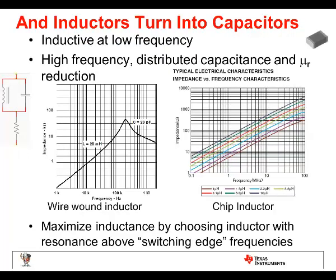Inductors can also be capacitive, because the winding around the magnetic core has capacitance between windings in parallel with the inductance, plus series resistance. On the frequency chart, sweeping from 1 kHz up to about 200 kHz the impedance increases to the resonant frequency of the core and winding. Beyond that, capacitance dominates. A chip inductor, however, doesn't even start to roll off after 100 MHz, making it suitable for high-frequency switching converters switching in the 1 to 3 MHz range.